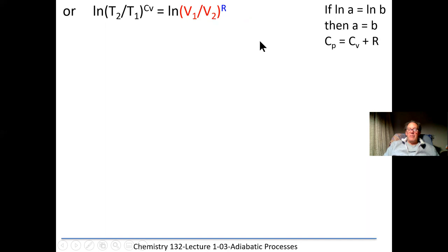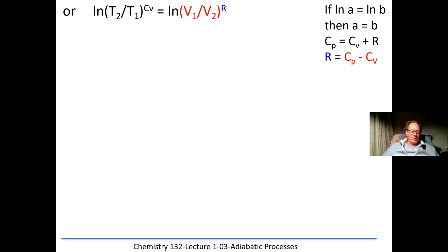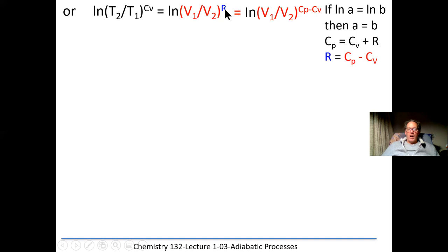From your information sheet, Cp equals Cv plus R for a monatomic ideal gas, so R equals Cp minus Cv. Substituting for R, we get ln[(T2/T1)^Cv] equals ln[(V1/V2)^(Cp−Cv)]. And since ln(a) = ln(b) implies a = b, we simply write (T2/T1)^Cv equals (V1/V2)^(Cp−Cv). Let's continue with this equation to see where it takes us.